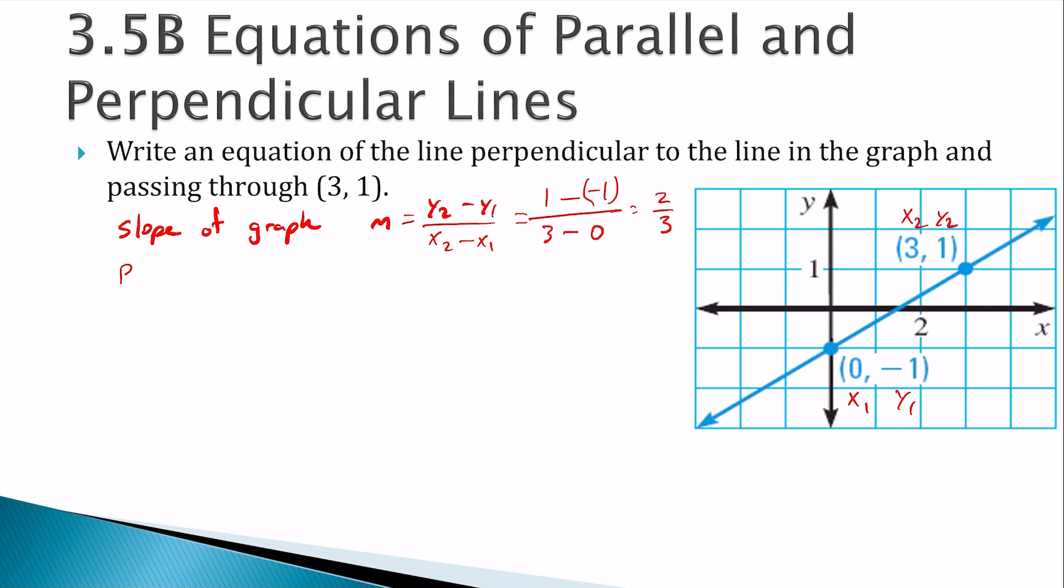The perpendicular slope is the negative reciprocal. So this perpendicular slope, I'm going to take that 2 over 3, I'm going to turn it upside down, make it 3 over 2, and I'm going to change the sign. 2 over 3 is positive, so my perpendicular slope is negative 3 over 2.